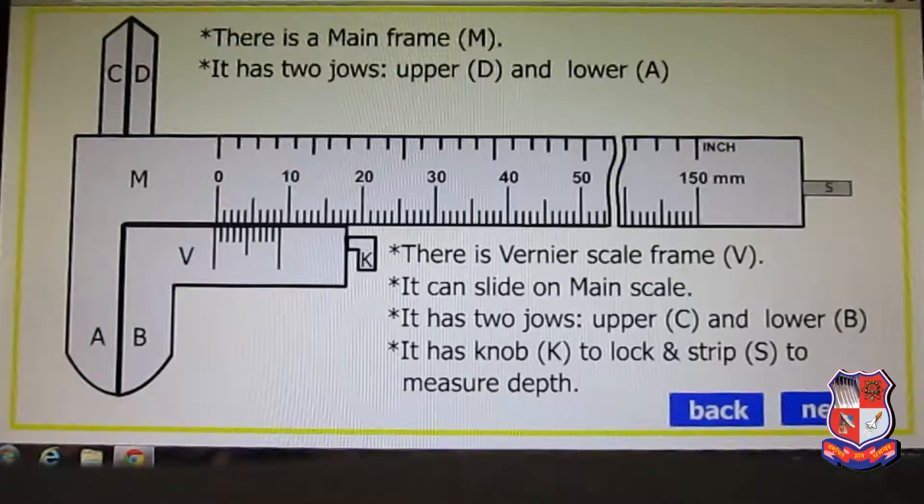There is another part called vernier scale frame V. It is here and it can slide on the main scale. It has two jaws, upper C and lower B, and it has a knob K to lock and strip S to measure the depth. Here is K, the knob that is for locking the object which is kept here, and this is the tip for measurement of small height or small depth.